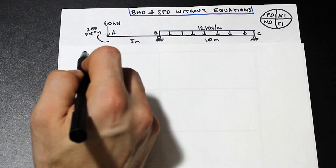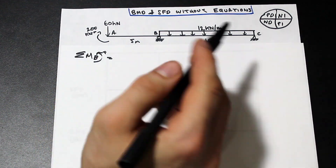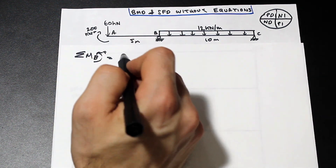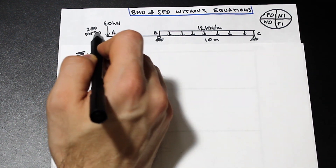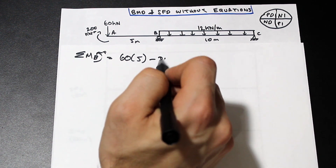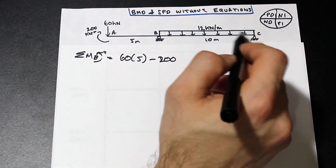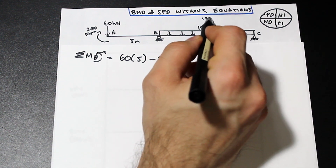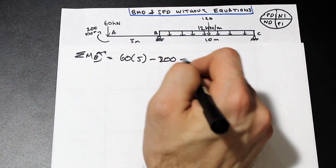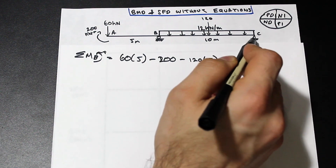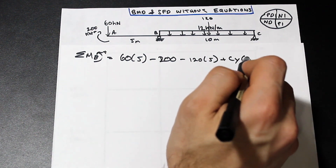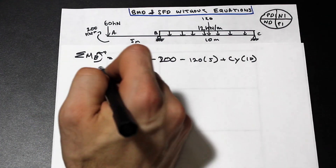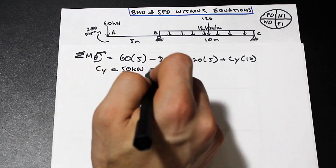Let's start at B. We'll take the moment at B. The sum of the moments at a roller support has to equal zero. Starting with the 60 kilonewton force — it's five meters away, it's positive. We have a 200 kilonewton meter concentrated moment, that's in the negative direction. This 12 kilonewton per meter distributed load is going to be 12 times 10, that's the force acting here — that's 120 — and that's going to be times five, in the negative direction. And we have CY, that's positive, and that is 10 meters from B. Solving for CY, we get CY is equal to 50 kilonewtons up.